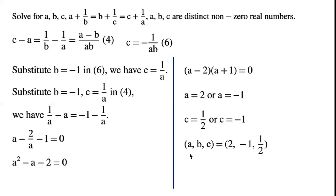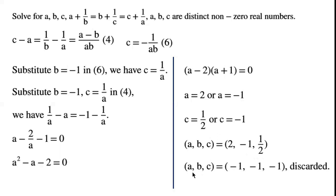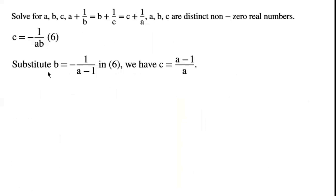So A, B, C equals 2, minus 1, one half. Or A, B, C equals minus 1, minus 1, minus 1. This second set of solutions is discarded as A, B, C are required to be distinct non-zero real numbers.